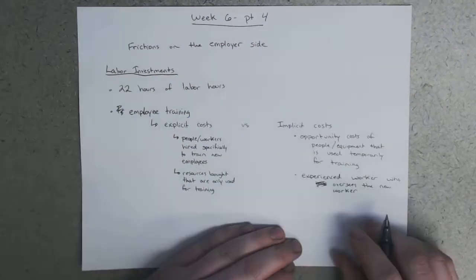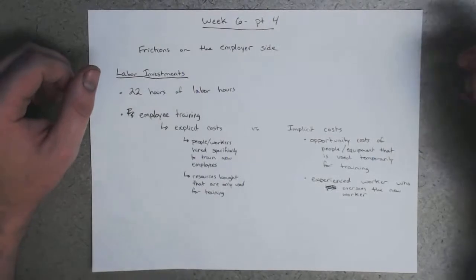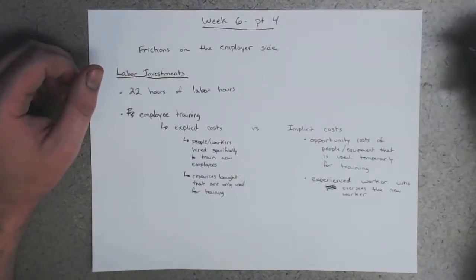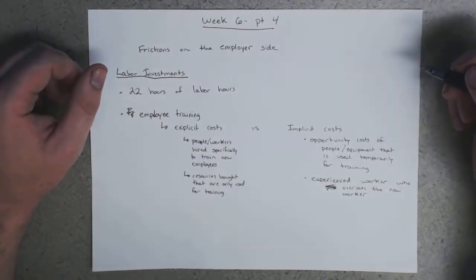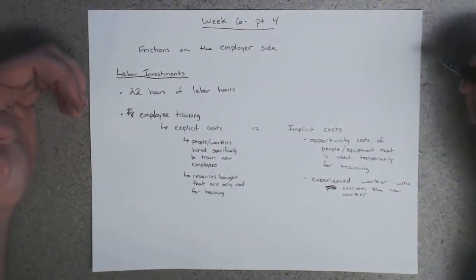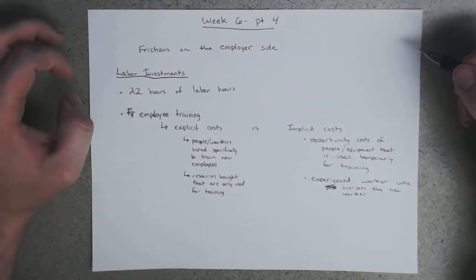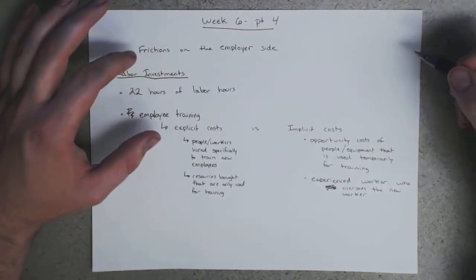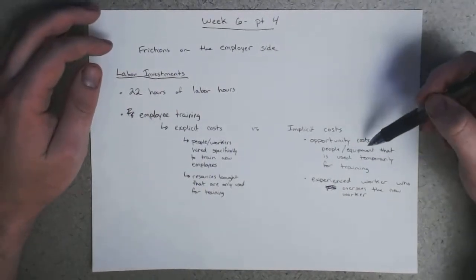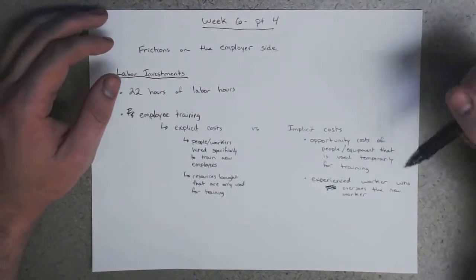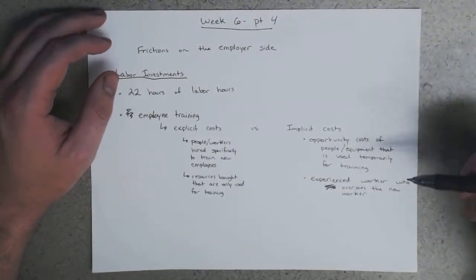So if you've ever been a server at a restaurant, your first couple days on the job were probably spent going around the restaurant with someone who had been there for a long time or for longer than you, making sure that you were doing things correctly. So you had someone with experience who was basically watching you, standing over your shoulder, making sure that you were doing everything correct. That person could have been actually working instead. So their actual productivity is reduced because they are spending their time training you instead of working.